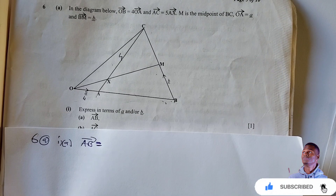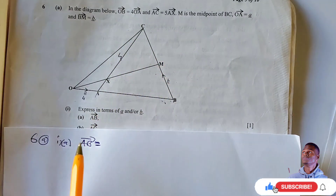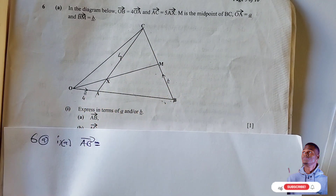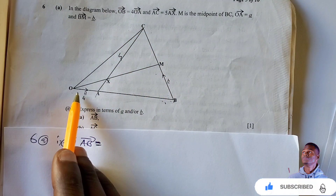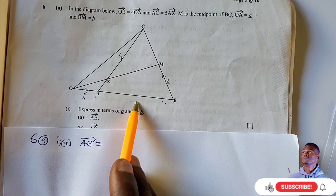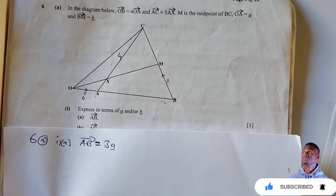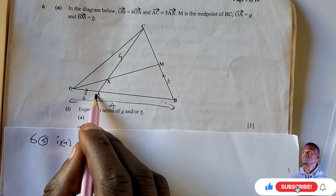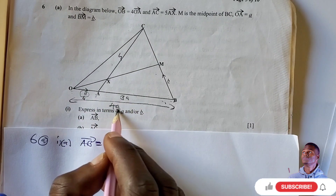AB is not found by going through the origin via AC. We use the given information directly. OB is four times OA. So if OA is vector A, then AB is three A, because A plus three A equals four A — which is OB. Simple.